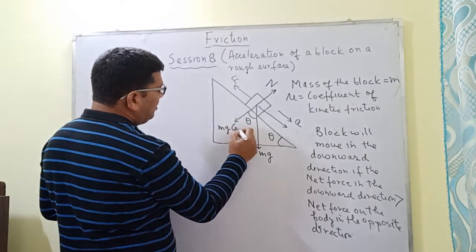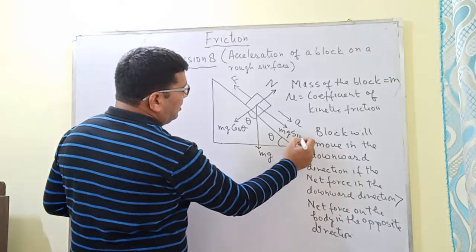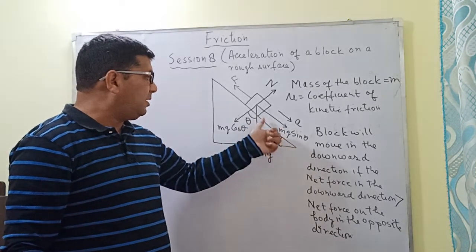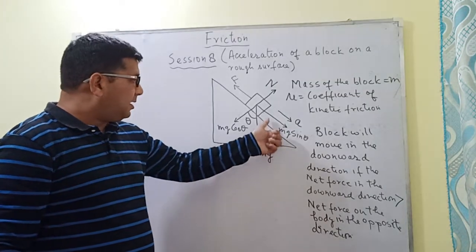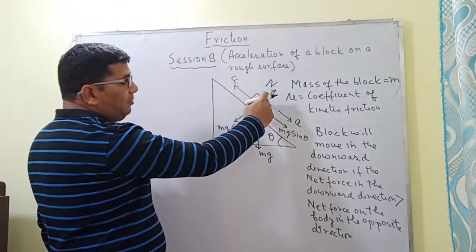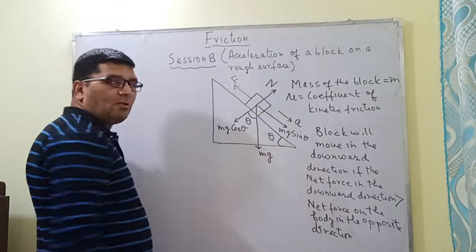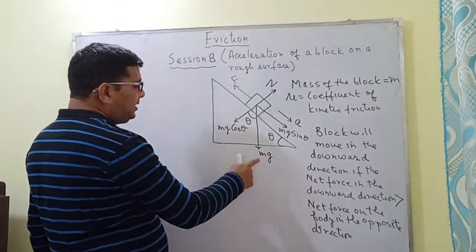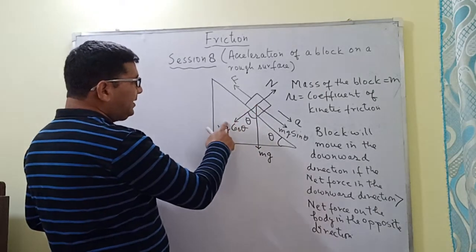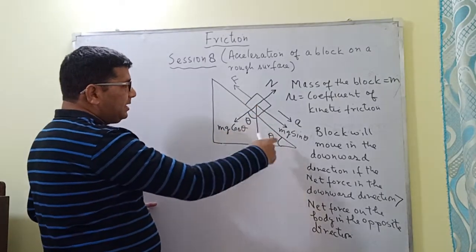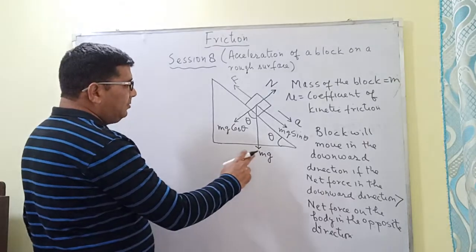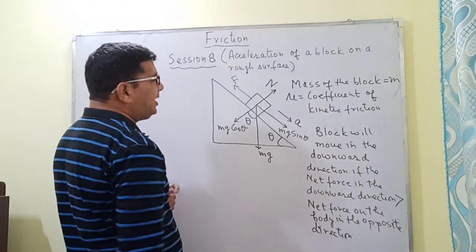Since the angle is theta, this angle is also equal to theta. The component perpendicular to the plane is mg cos theta, and the component along the inclined plane is mg sin theta. The normal reaction acts upward perpendicular to the surface, and mg cos theta is the component of weight acting perpendicular to the inclined plane.